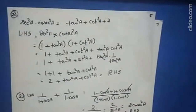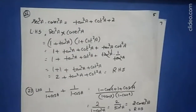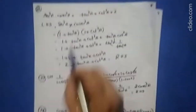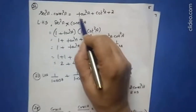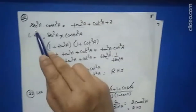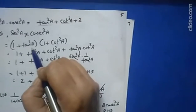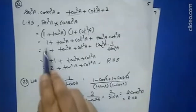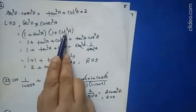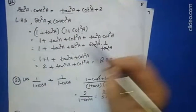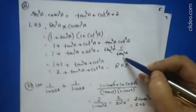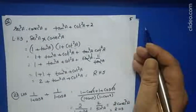Question 22: sec²a·cosec²a = tan²a + cot²a + 2. Write sec²a = (1 + tan²a) and cosec²a = (1 + cot²a), then expand by binomial multiplication: 1 + tan²a + cot²a + tan²a·cot²a. Since tan²a·cot²a = 1, this gives 1 + 1 + tan²a + cot²a = 2 + tan²a + cot²a, which is the right hand side.